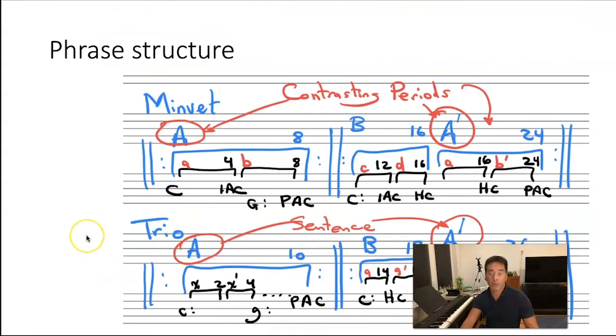This is what the phrase structure looks like then. I just basically put these letters in here. And the X. I could have put, I didn't even put the X over here. So over here, this is X, X prime. It should say the same thing here. These outer A sections in the minuet, these are contrasting periods. Why? Well, the two phrases go together. And the second phrase ends on a stronger cadence than the first. So that's a period structure. Here, half cadence, PAC. Here, IAC, PAC.